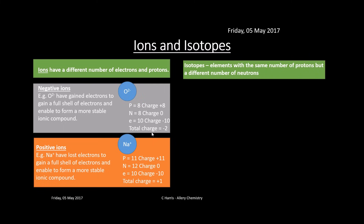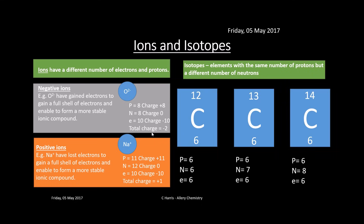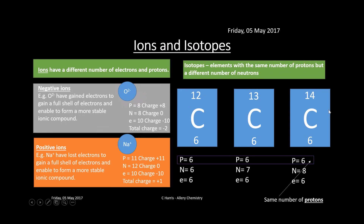Isotopes are elements with the same number of protons but a different number of neutrons, so they have a different mass. Here are three examples: carbon-12, carbon-13, and carbon-14. They all have the same number of protons, but the number of neutrons differs. Carbon-12 has six neutrons, carbon-13 has seven, and carbon-14 has eight neutrons.